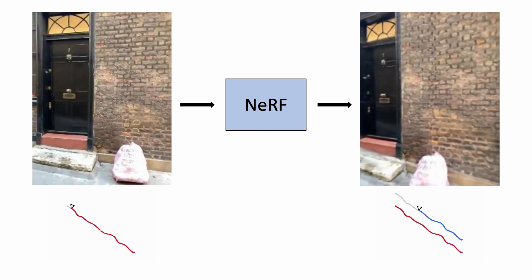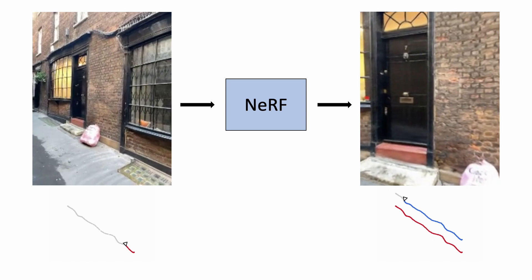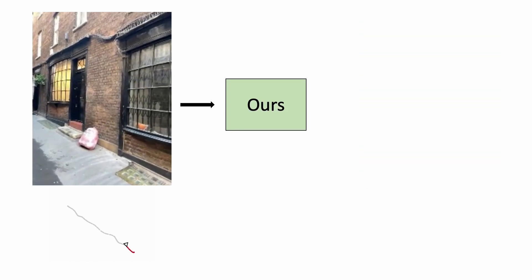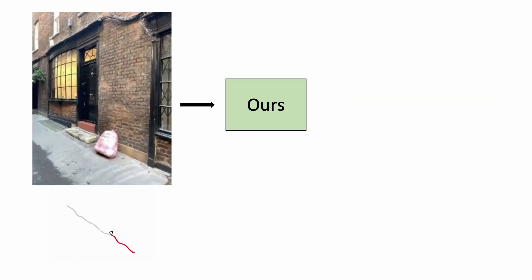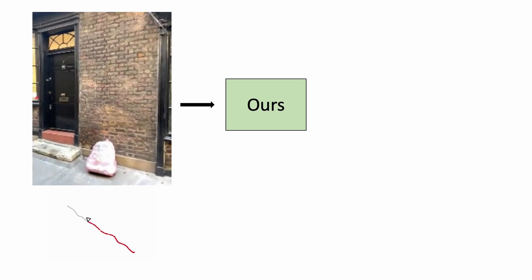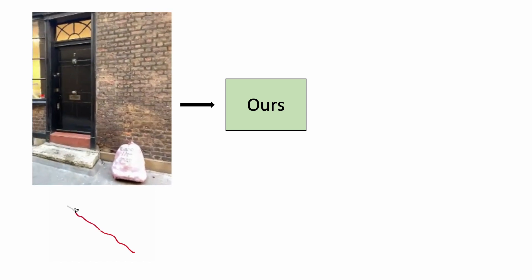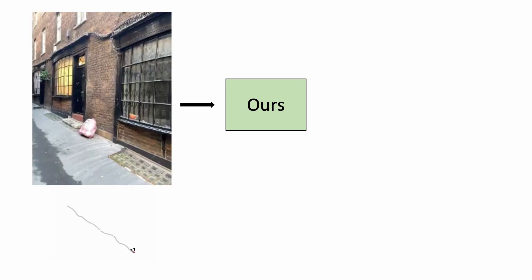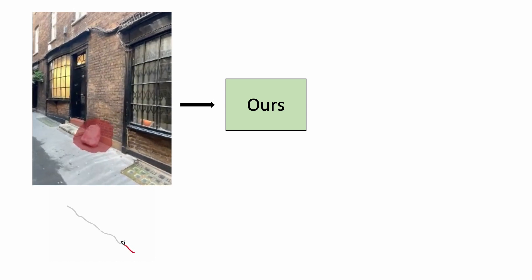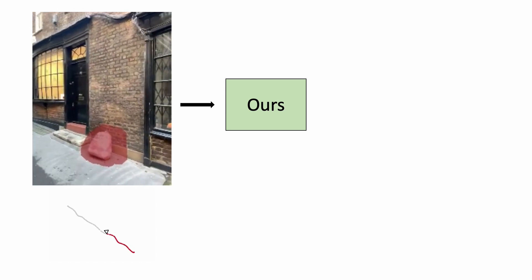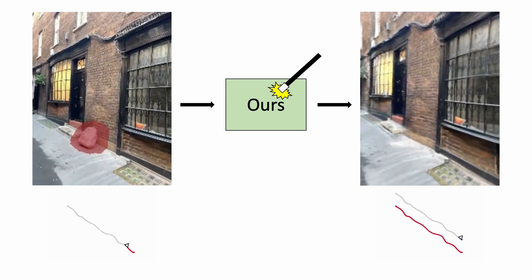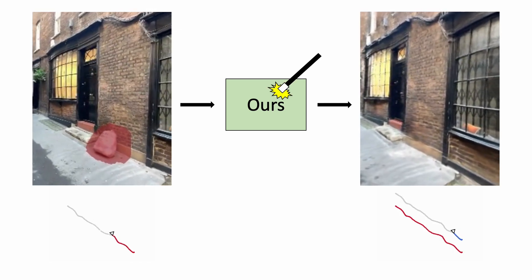But the real world isn't always as beautiful as we might like. This is a nice-looking doorway but there's an ugly trash bag left out on the street. In this work, we present a method to remove objects from NeRF reconstructions. So if the ugly object gets masked in the input frames, we can generate renderings with the object removed, like this.